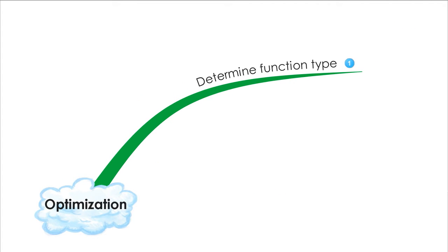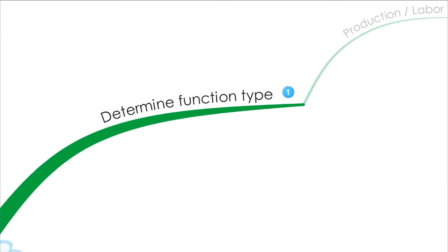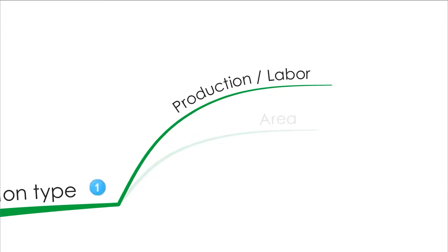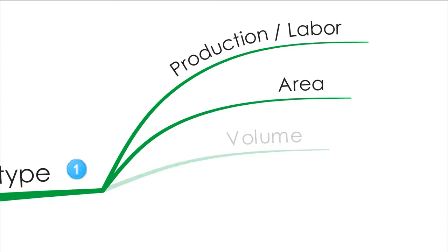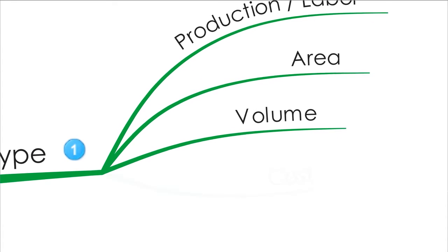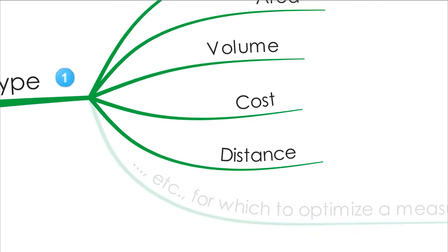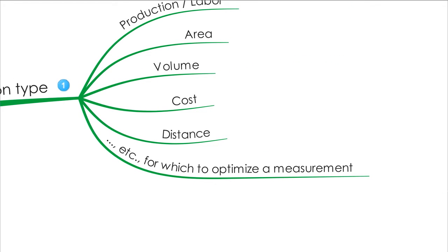The first thing you're going to want to do is determine the function type — figure out what kind of function you're going to end up with. It might be a business calculus application where you maximize something related to production or labor. It could be area, volume, cost, distance, or any other type.